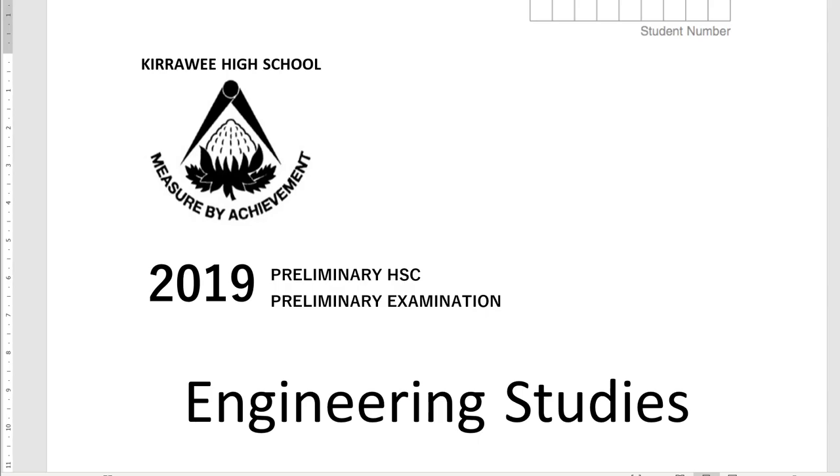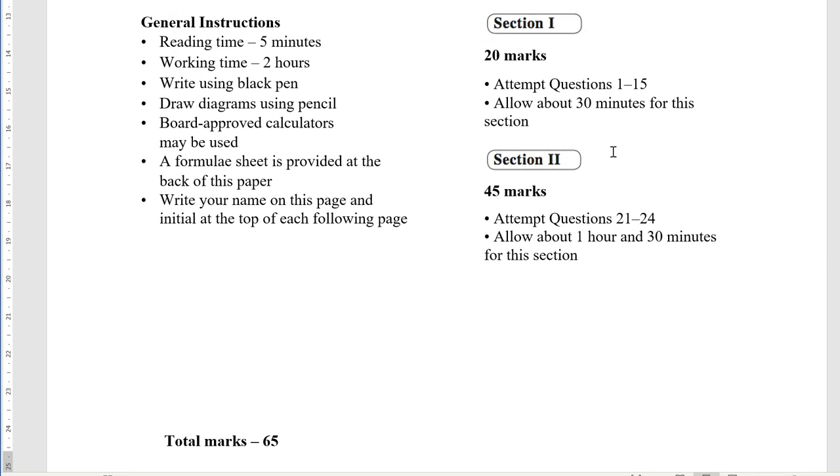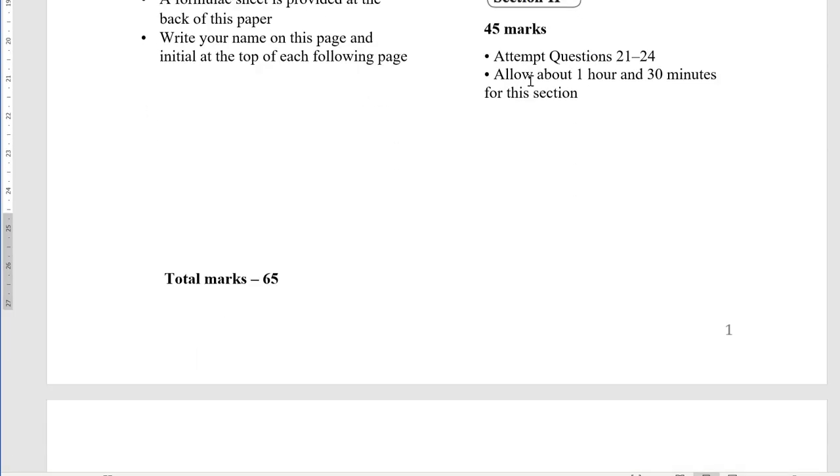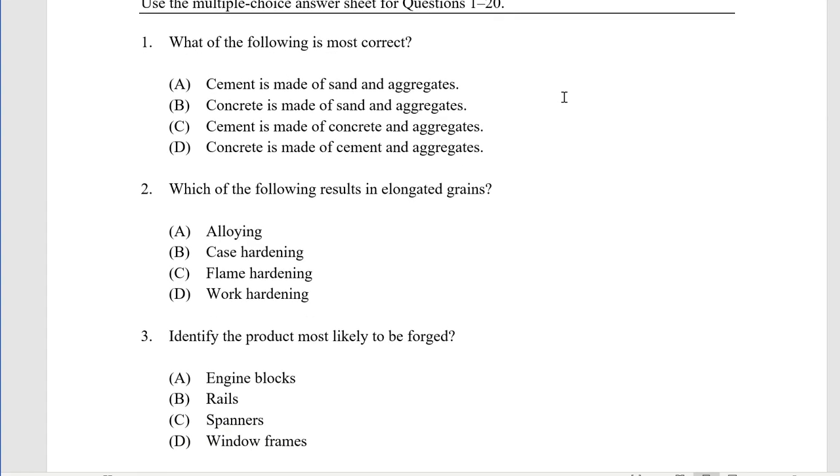In this video I'm going to be going through the 2019 Preliminary HSC or Year 11 Engineering Studies End-of-Year Exam, the Preliminary Examination. This was 65 marks which is typical for a two-hour exam. I'm going to go through these really quickly, only going for the answers. It's possible I'm going to get things wrong because even though I wrote this test, sometimes I read things quickly and make mistakes.